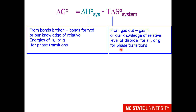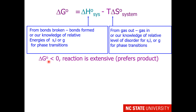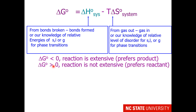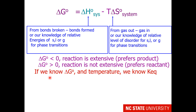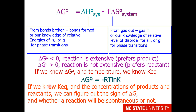Or, if it's a phase change, we can look at our knowledge of relative level of disorder for solid, liquid, or gas. When delta G0 is negative, the reaction is extensive and prefers product. When delta G0 is positive, the reaction is not extensive and prefers to remain at reactant. If we know delta G0 and the temperature, we know Keq. There is a relationship between delta G0 and the equilibrium constant. And if we know Keq and the concentration of products and reactants, we can figure out the sign of delta G under our specific conditions and know whether a reaction will be spontaneous or not.